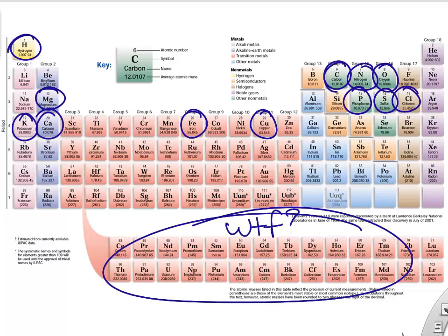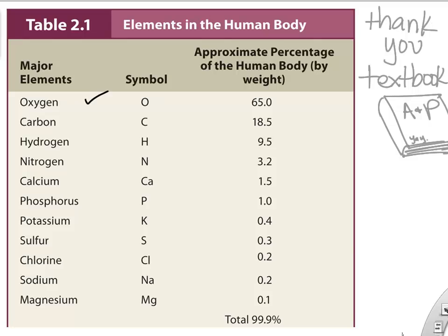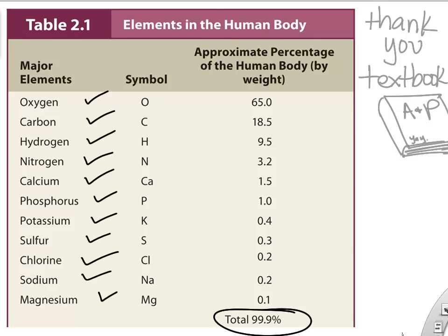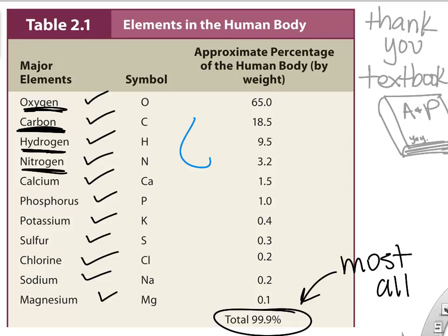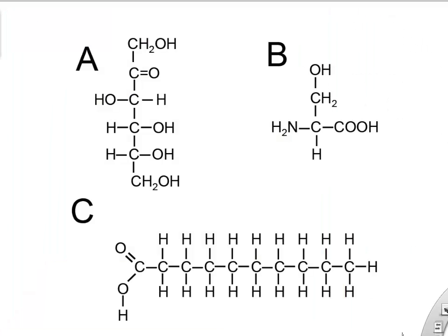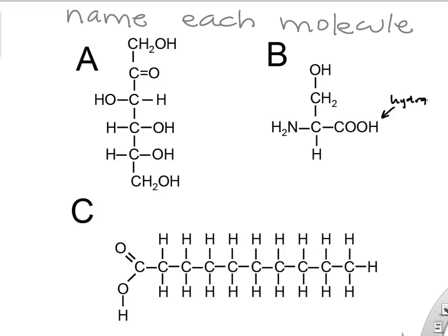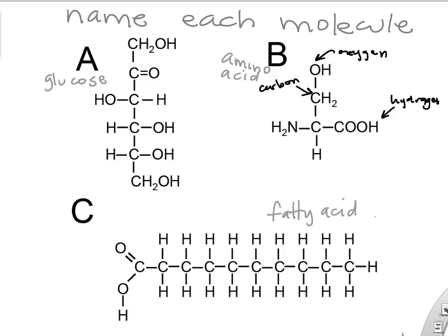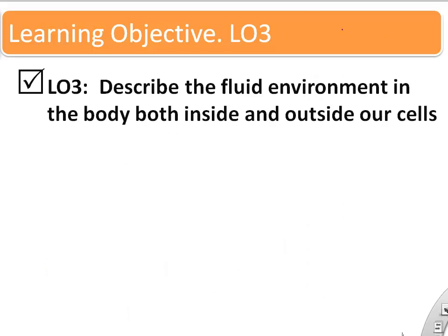Our textbook gives a nice breakdown by percentage, showing oxygen, carbon, hydrogen, nitrogen, calcium, potassium, and phosphorus at the top. Some of the molecules shown — made of carbons, hydrogens, and familiar atoms — include a glucose molecule, an amino acid like alanine, and a fatty acid. These all share certain atoms in common.